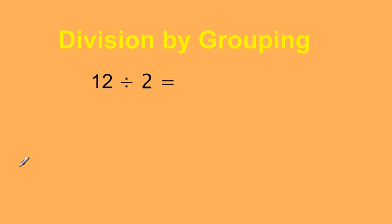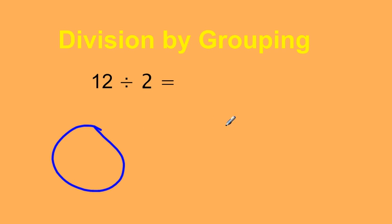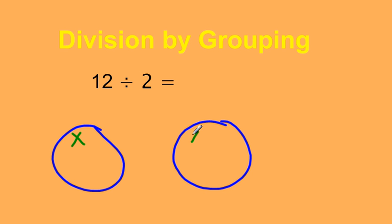Let's look at another one: 12 divided by 2. That means I have 12 in total, and I'm going to divide them between 2 groups. So there's my 2 groups, and I have 12 to distribute. So let's count: 1, 2, 3, 4, 5, 6, 7, 8.